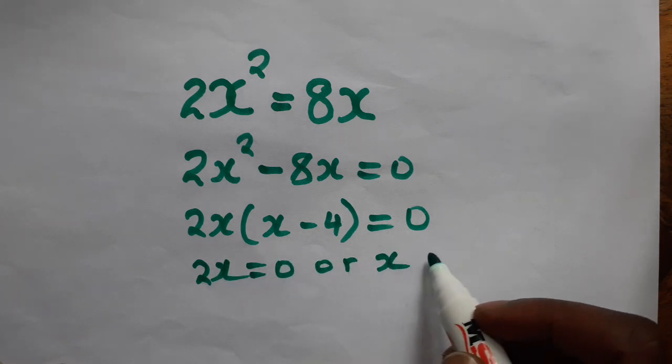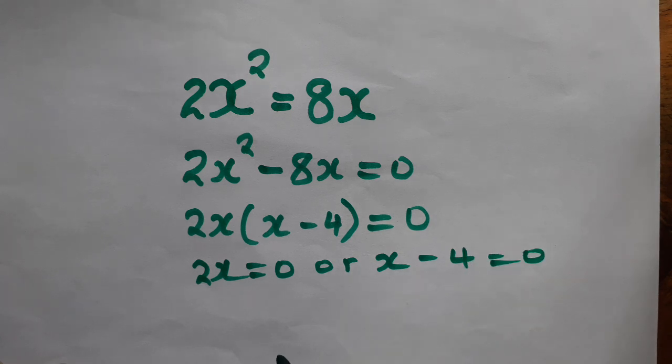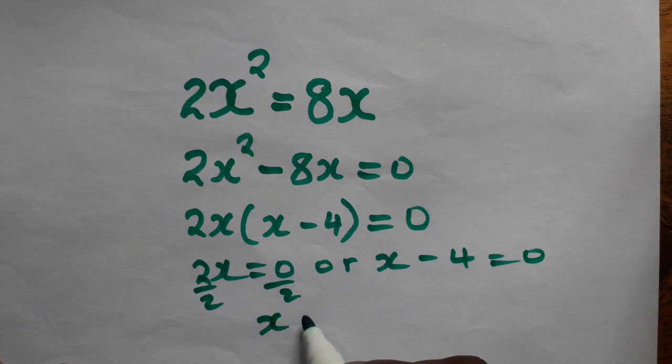Or equals to zero. And here we need to divide this side by two, divide this side by two, so x equals to zero.